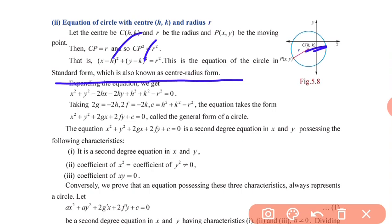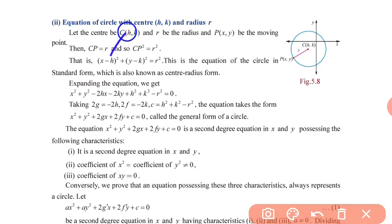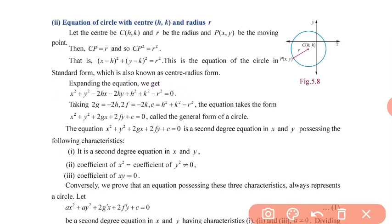Using this standard form with center (h, k) and radius R, we expand using the formula (a minus b) squared equals a squared minus 2ab plus b squared. This gives: x squared plus y squared minus 2hx minus 2ky plus h squared plus k squared minus R squared equals 0. Substituting g, f, c notation, this becomes the general form: x squared plus y squared plus 2gx plus 2fy plus c equals 0.